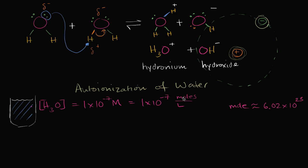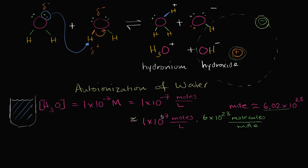So you might say: 1×10⁻⁷ times 6.02×10²³ — that would still get us approximately 6×10¹⁶ molecules per liter. So your first reaction is, oh my god, I'm going to have roughly 6×10¹⁶ molecules of hydronium in this liter — that's a lot, we should see it all the time.